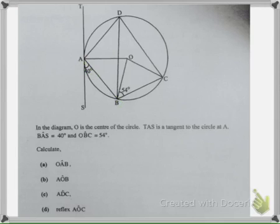We can see that AO is a radius, which means a tangent forms 90 degrees when it meets a radius. Therefore, angle OAB is 90 minus 40 degrees, which is 50 degrees. So this is 50 degrees.